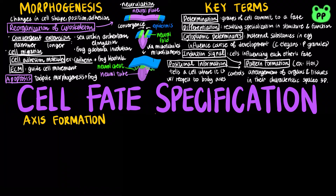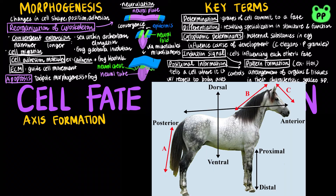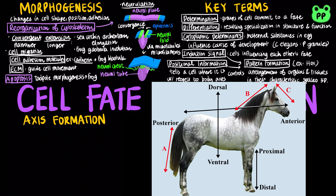Embryonic cells respond to positional information indicating location along three axes: the proximal-distal axis, anterior-posterior axis, and the dorsal-ventral axis. In frogs, the egg polarity determines the anterior-posterior axis, whereas cortical rotation determines the dorsal-ventral axis.